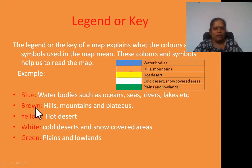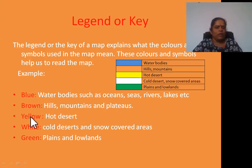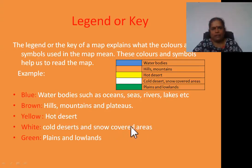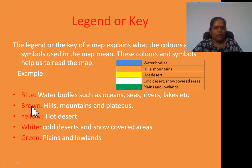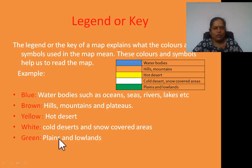Second: brown color shows mountains and plateaus. Next: yellow color shows hot desert. Next: white color shows cold desert and snow-covered areas. Next: green color shows plains and lowlands.